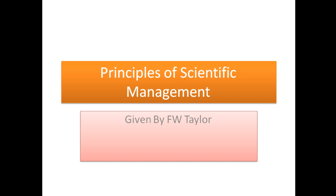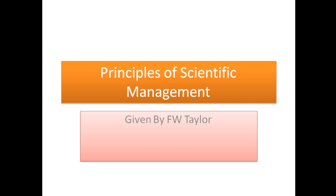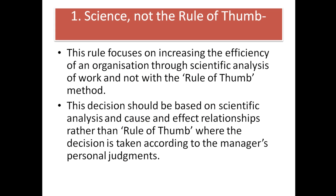Welcome all. Today we are going to start with the topic of principles of scientific management. These principles are given by F.W. Taylor. In the previous lecture we covered the principles of management given by Fayol, so in this video we are going to cover the principles given by F.W. Taylor. F.W. Taylor named four principles, basically called the scientific principles of scientific management, because they are scientifically proven — research was done, they were applied, and the results were good and proper, and then these principles were given.